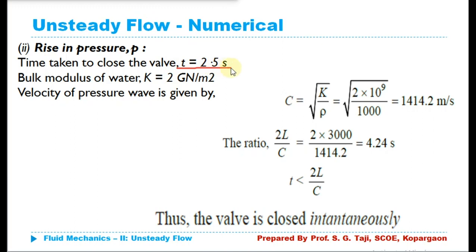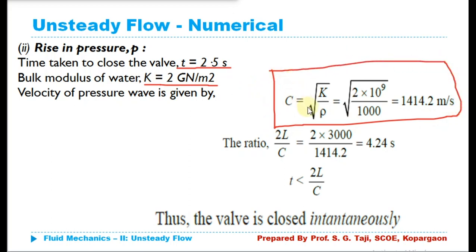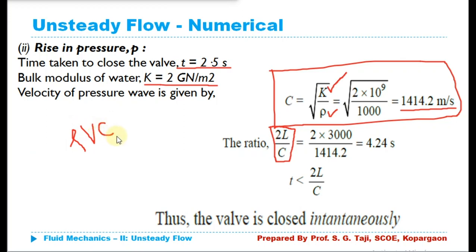When the time taken for closing the valve is 2.5 seconds, and bulk modulus of water K = 2 giga newton per meter square, first calculate the value of C using the equation C = √(K/ρ), where K is the bulk modulus of elasticity of water and ρ is the density. We get C = 1414.2 meter per second. We calculate this C separately because the instantaneous closure equation P = ρVC will use this value.